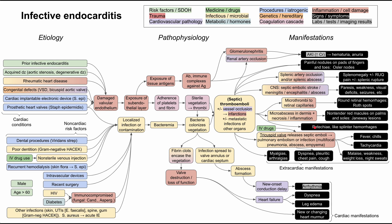To clarify, the systemic manifestations described earlier arise from left-sided endocarditis, affecting the systemic circulation. For laboratory findings: you might have positive blood cultures identifying one of the organisms commonly known to cause infective endocarditis. Urinalysis may show hematuria and nephritic sediments from renal artery occlusion, AKI, or glomerulonephritis. General labs — CBC — may show elevated inflammatory markers including erythrocyte sedimentation rate and C-reactive protein, as well as leukocytosis with high white blood cell counts.